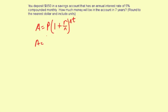So A equals. The principal amount is $850, times 1 plus r, the interest rate which is 5% or 0.05, divided by n, the number of times it's compounded per year. Monthly means 12 times per year, so you're going to put a 12 here also, and then to the power of 12 times 7, the number of years.